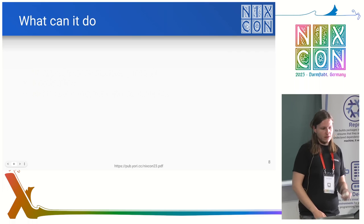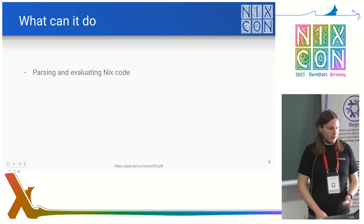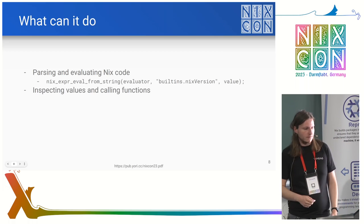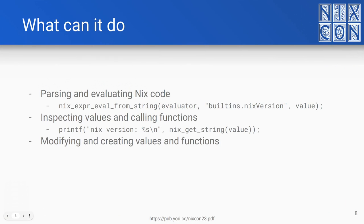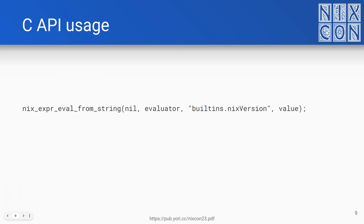On to implementation. With the C API, you can do three basic things: evaluate expressions from strings, inspect the returned expressions, and actually implement functions — use them to modify Nix values passed to it and return them. You can add them to built-ins. So quite a bit of cool stuff. Then there's the annoyance of error handling and garbage collection, but those are all worked out. You start out with this eval expression function — it seems reasonable enough.